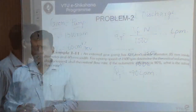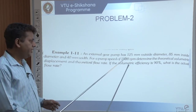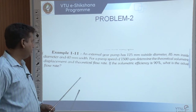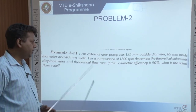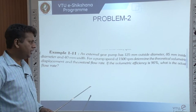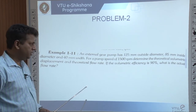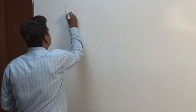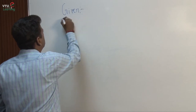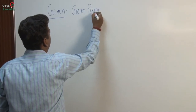Moving on to the next problem. An external gear pump has 125 mm outside diameter, 85 mm inside diameter, and 40 mm width — these are the gear dimensions. For a pump speed of 1500 rpm, determine the theoretical volumetric displacement and theoretical flow rate. If the volumetric efficiency is 90 percent, what is the actual flow rate? This problem is related to a gear pump. Let us note the configuration.